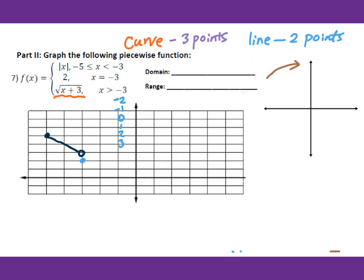I need three points. Include negative 3 as the boundary. The table: x equals negative 3 gives square root of (negative 3 plus 3) equals 0; x equals negative 2 gives 1; x equals 1 gives 2. The boundary point negative 3 is an open circle since x is strictly greater than negative 3. Plot (negative 3, 0) as open circle, (negative 2, 1), and (1, 2), then connect them as a curve.